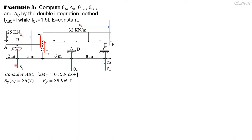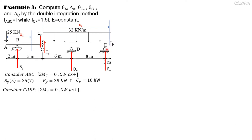By is 35 kN upward. From summation of forces in y, Cy equals 10, since 25 plus 10 equals 35. So Cy is 10 kN. This value is also 10. Now considering CDEF, we sum moments about point E to solve for Dy, taking Cy as 10 kN.